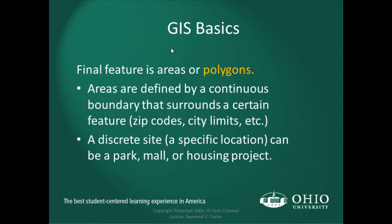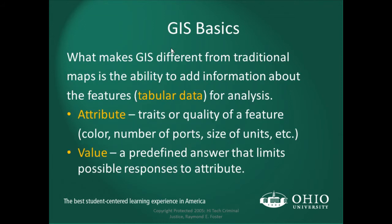Areas are polygons defined by a continuous boundary surrounding a feature — zip codes, city limits, a park, a mall, or a housing project. What makes GIS different from traditional maps is the ability to add additional attribute information to a feature. For example, a point feature for a police department can have attribute data giving the address, number of people in the building, color, size, and other details. The same attribute data can be applied to line and polygonal data.